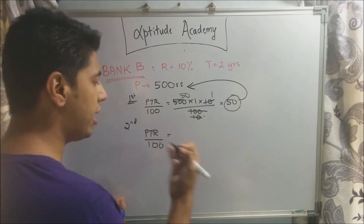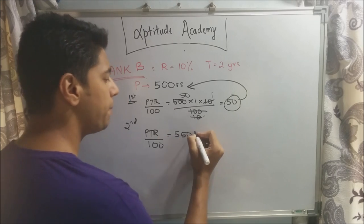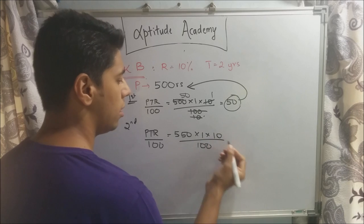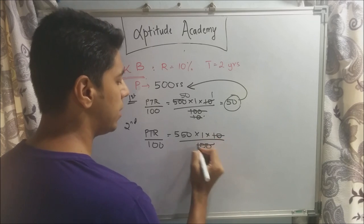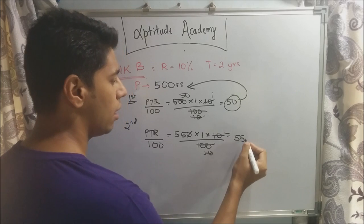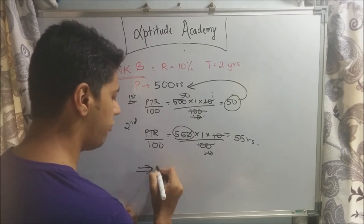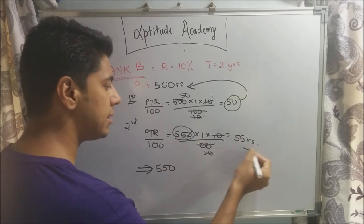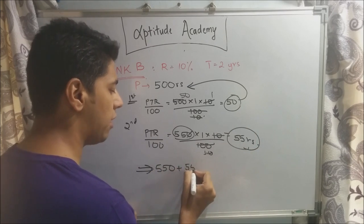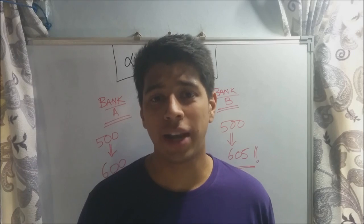When you calculate interest for the second year you use the new principal: 550 × 1 × 10 ÷ 100, which gives you 55 rupees. At the end of two years you get the principal 550 plus the second year interest of 55 rupees, giving you 605 rupees.